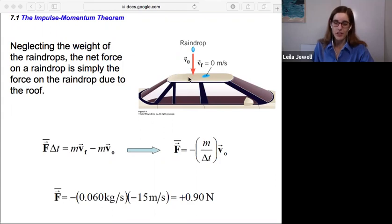I'm glad you asked. It's positive because over here, this is the force on the raindrop due to the roof. So what the raindrop feels from the roof is an upward force. It's like running into the wall. That's why it's in the positive direction. Now, this describes neglecting the weight of the raindrops, but the net force on the raindrop is simply the force due to the roof.